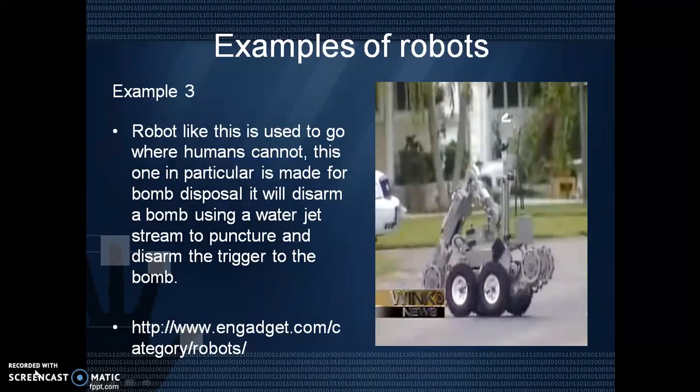In example three, this robot is used to go where humans can't. This one in particular is made for bomb disposal. It will disarm a bomb using a water jet stream to puncture and disarm the trigger to the bomb.